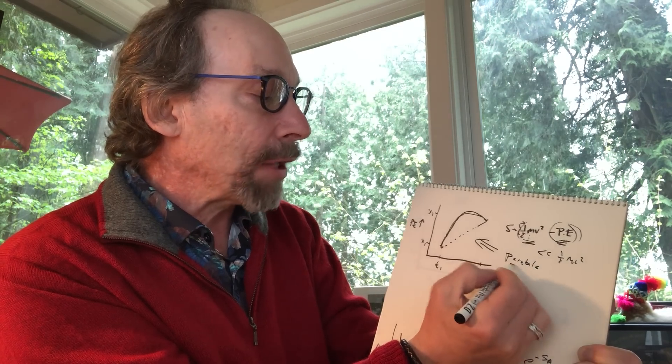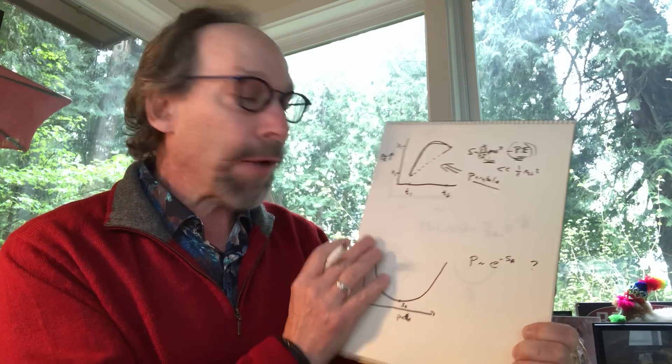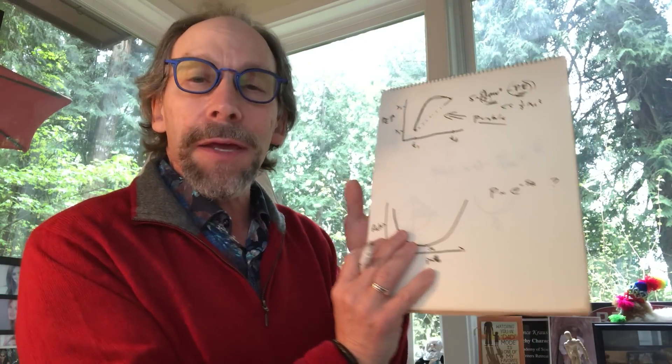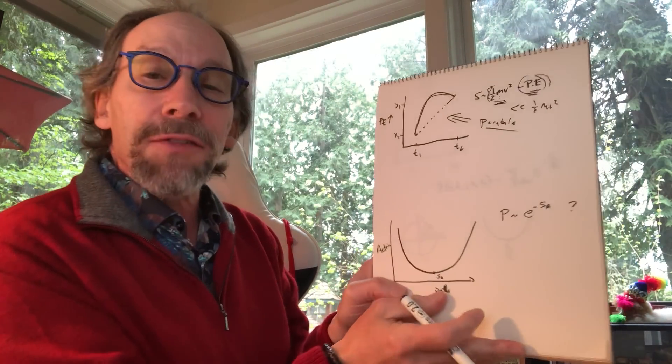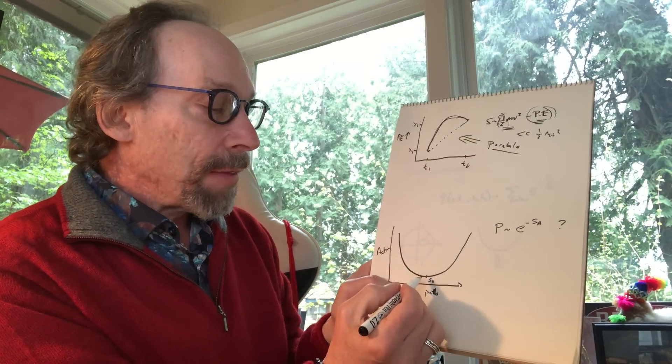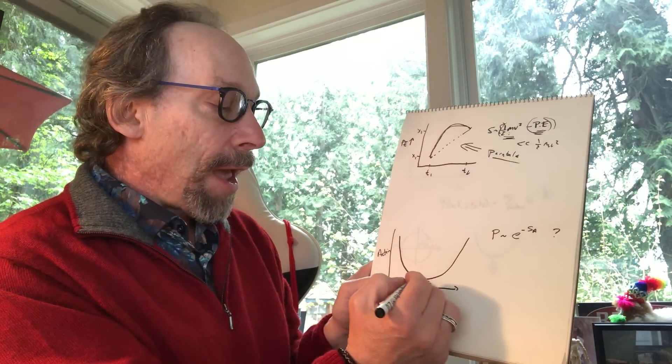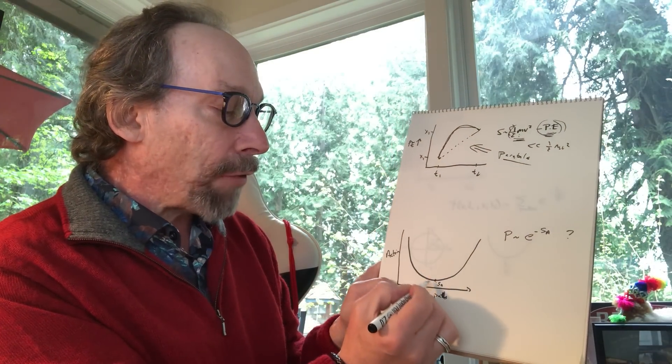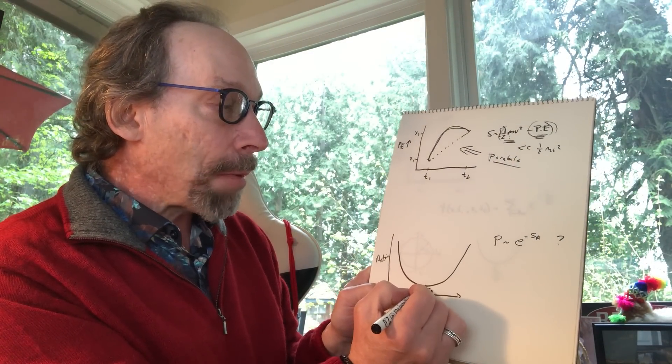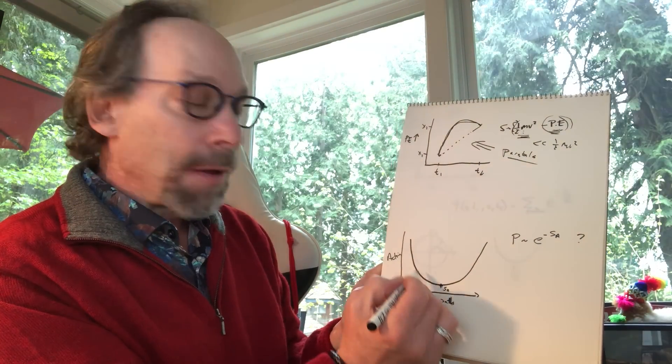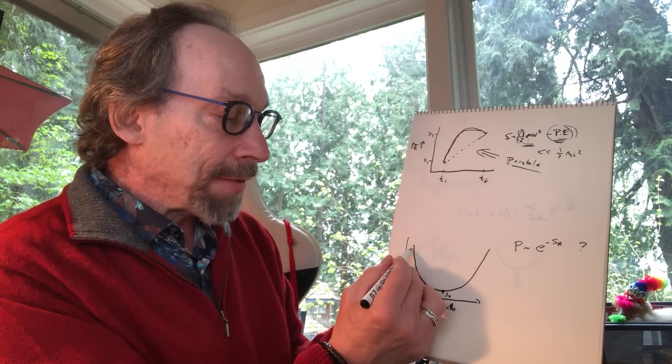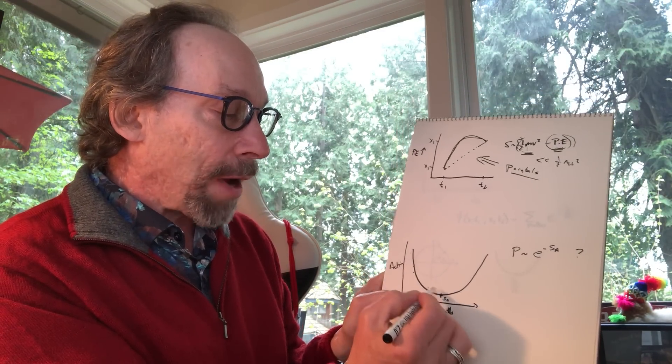So minimizing the action is equivalent to what you'd get from Newton's laws. Now, it doesn't really necessarily work this way but let's say I considered all different paths I could take here and I considered the action as a function of the path and there's some minimum action. In this case, it's a parabola. Otherwise, the action for a different path is much greater.